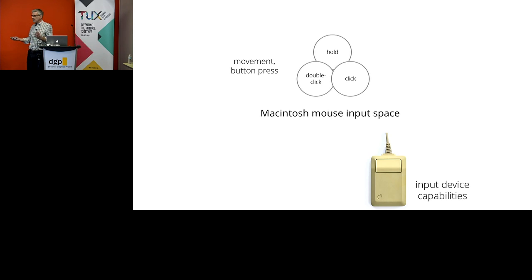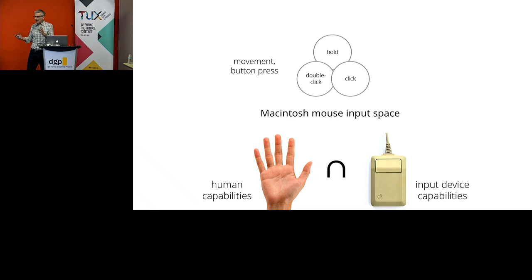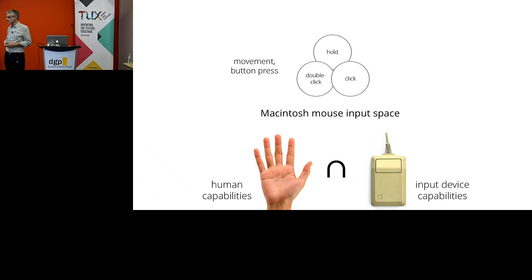So we have this input device, this simple mouse with one button, and it creates certain types of actions. You can move the mouse, click the button, hold down the button, click it, or even double click it. And when we combine these actions, we can think of the input space as not just what the mouse can do, but the intersection with what human capabilities are. It's very easy to move our hand and point at things, using this vocabulary the mouse creates.